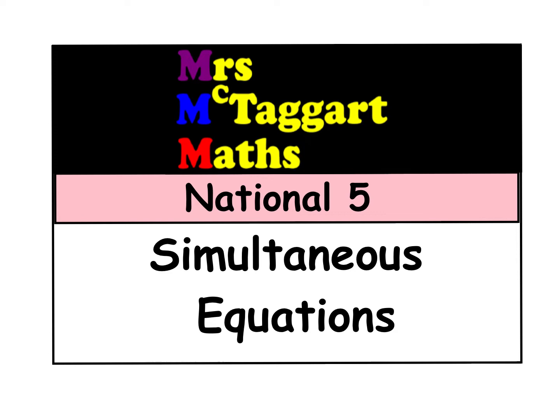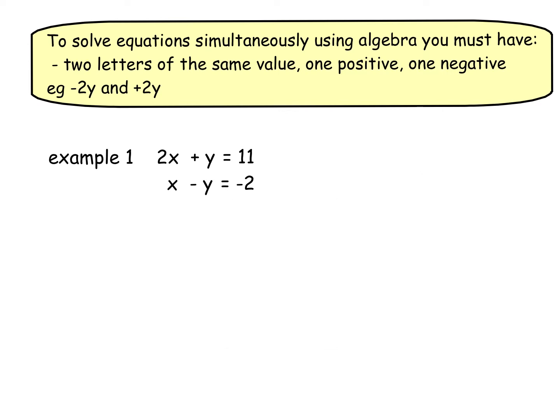So simultaneous equations — it's equations that happen simultaneously, so at the same time. Whenever you are solving simultaneous equations, here is an example of two of them. You're finding a value of x and y that work in both equations. So it's a pair of numbers that when I plug it into the first equation I get 11, and when I plug it into the second equation I get minus 2.